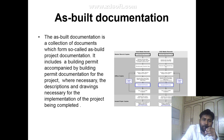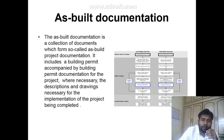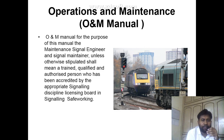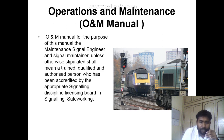As-built documentation is a collection of documents forming the as-built project documentation. It includes building permits and documentation for the project where necessary, along with drawings necessary for the implementation of the project. The operations and maintenance manual — O&M manual — is for the purpose of maintenance by signaling engineers and signaling maintainers, who are trained, qualified and authorized persons credited by the signaling discipline licensing board.